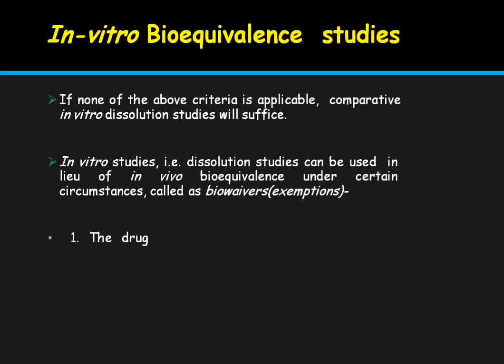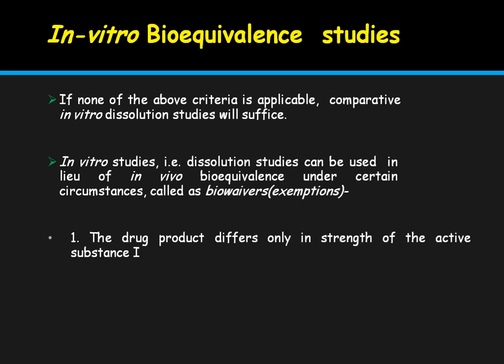In vitro bioequivalence studies are conducted outside animal systems. In vivo bioequivalence studies are conducted in different animal species and that data is submitted to the regulatory agency. For in vitro bioequivalence studies, you must simulate in vivo conditions in vitro and demonstrate bioequivalence. If none of the in vivo criteria are applicable, comparative in vitro dissolution studies will suffice.